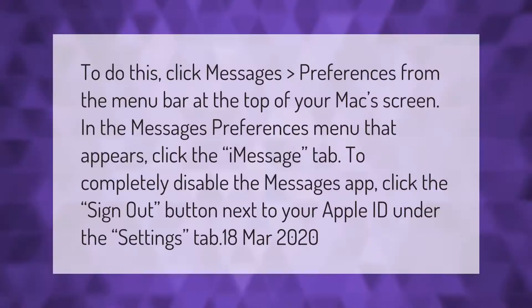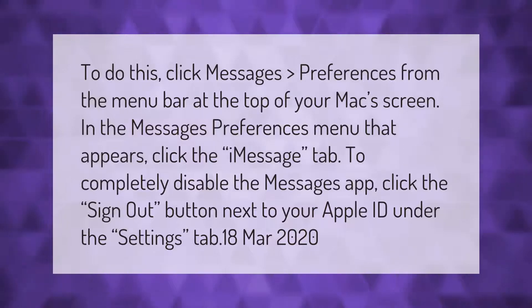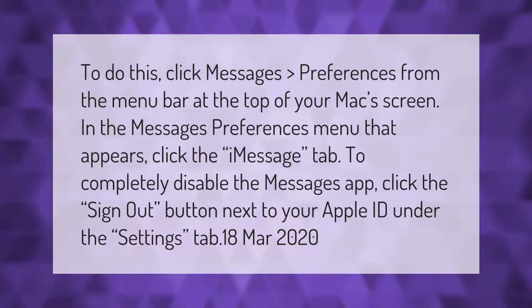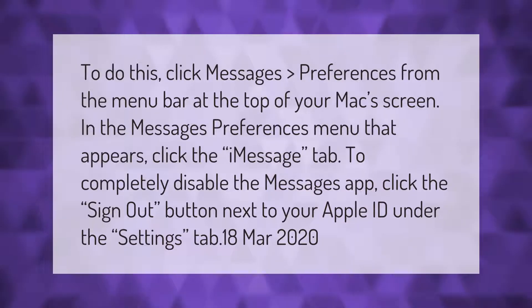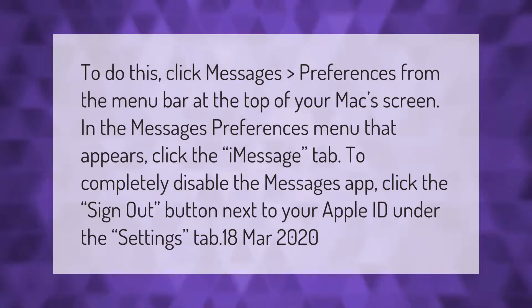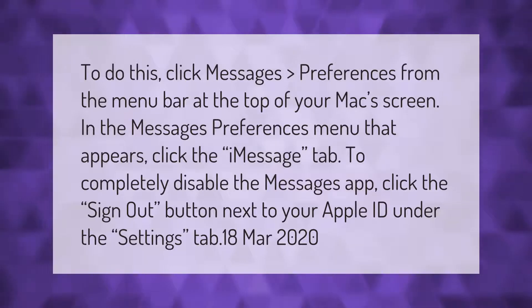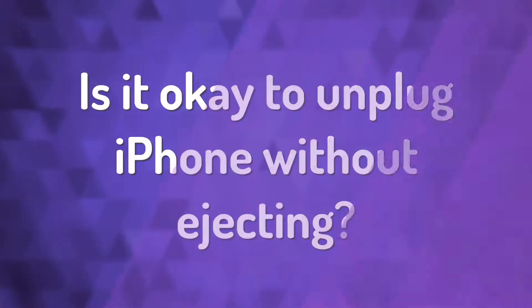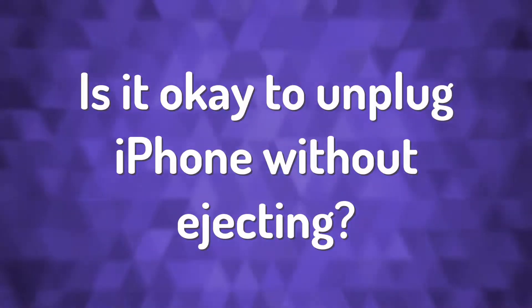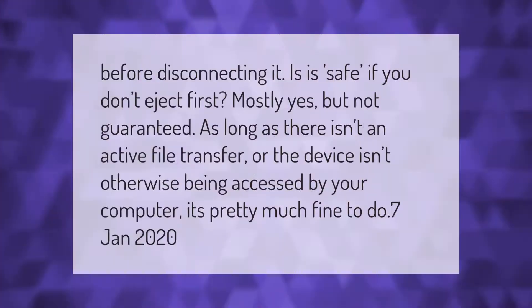To disable iMessage on Mac, click Messages > Preferences from the menu bar at the top of your Mac screen. In the Messages Preferences menu that appears, click the iMessage tab. To completely disable the Messages app, click the Sign Out button next to your Apple ID under the Settings tab.